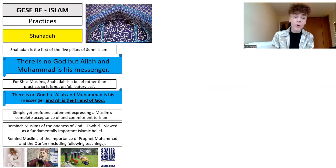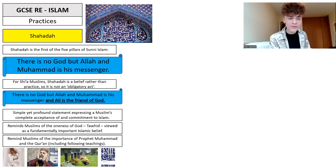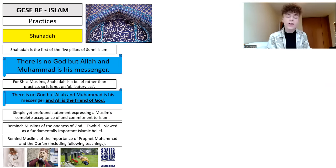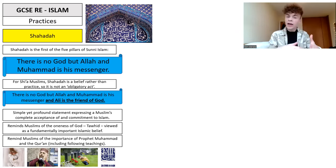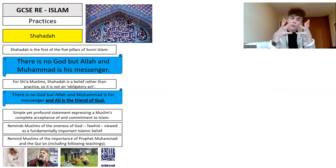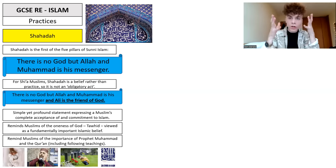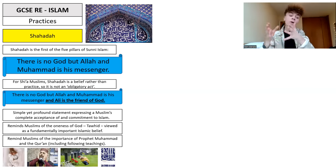Let's start with our first pillar: Shahada, the first of the five pillars of Sunni Islam. It is the statement that there is no God but Allah, and Muhammad is his messenger. For Shia Muslims, the Shahada is a belief rather than a practice — which is why it wasn't on the list of obligatory acts. But Shia Muslims of course also agree that there is no God but Allah and Muhammad is his messenger, reflecting that fundamental Islamic belief of Tawhid — the oneness of God — and that Muhammad is the seal of the prophets.